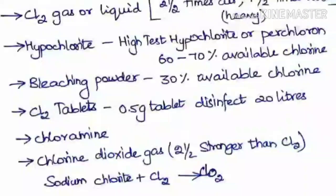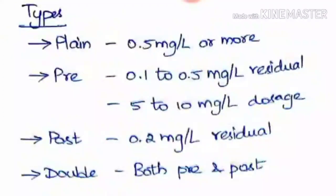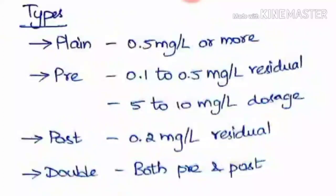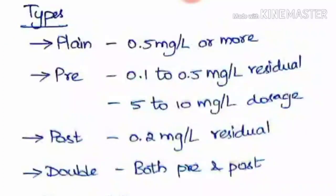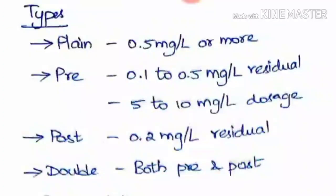The types of chlorination are as follows. The first is plain chlorination, adopted normally with a dosage of 0.5 mg/L or more. The next is pre-chlorination — while chlorination is normally done after filtration, if it is done before filtration or before sedimentation it is called pre-chlorination. This is used when the turbidity of the water is more, with a dosage range of 5 to 10 mg/L.